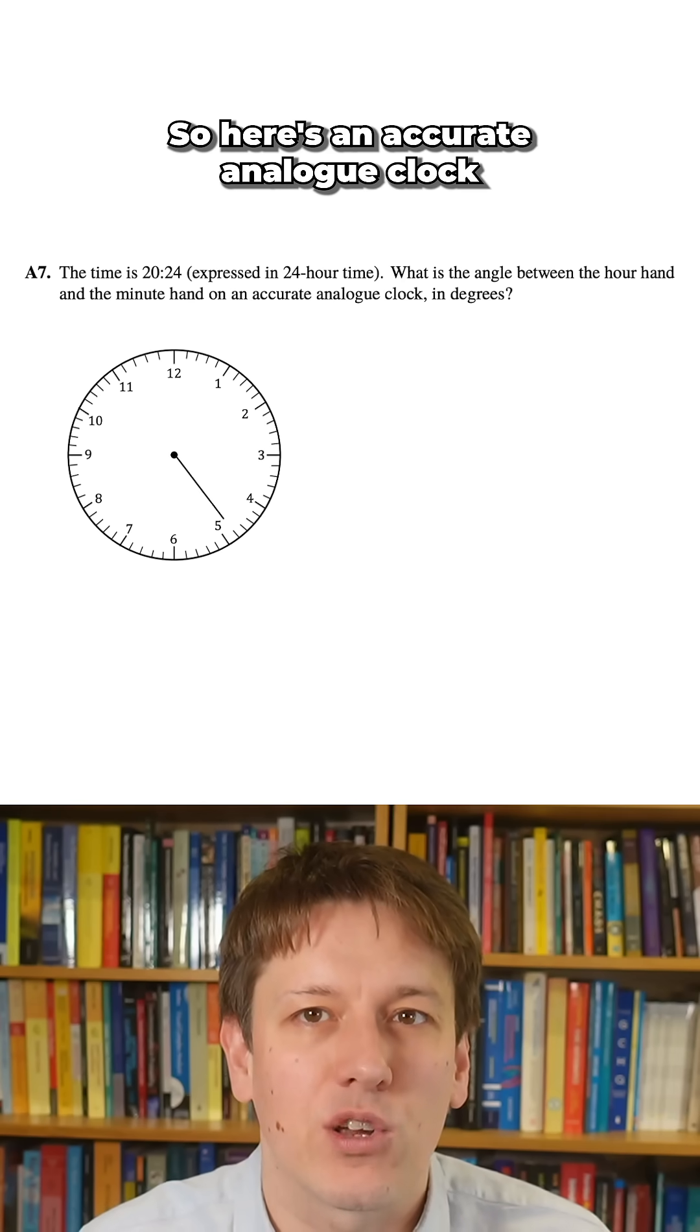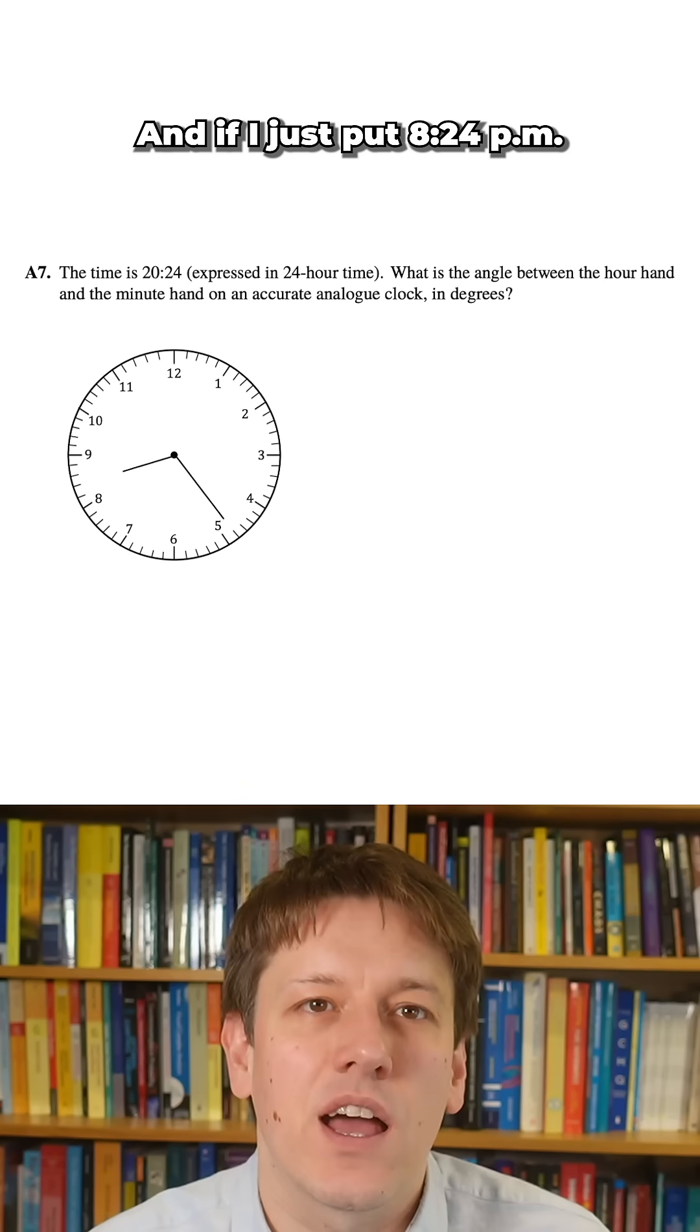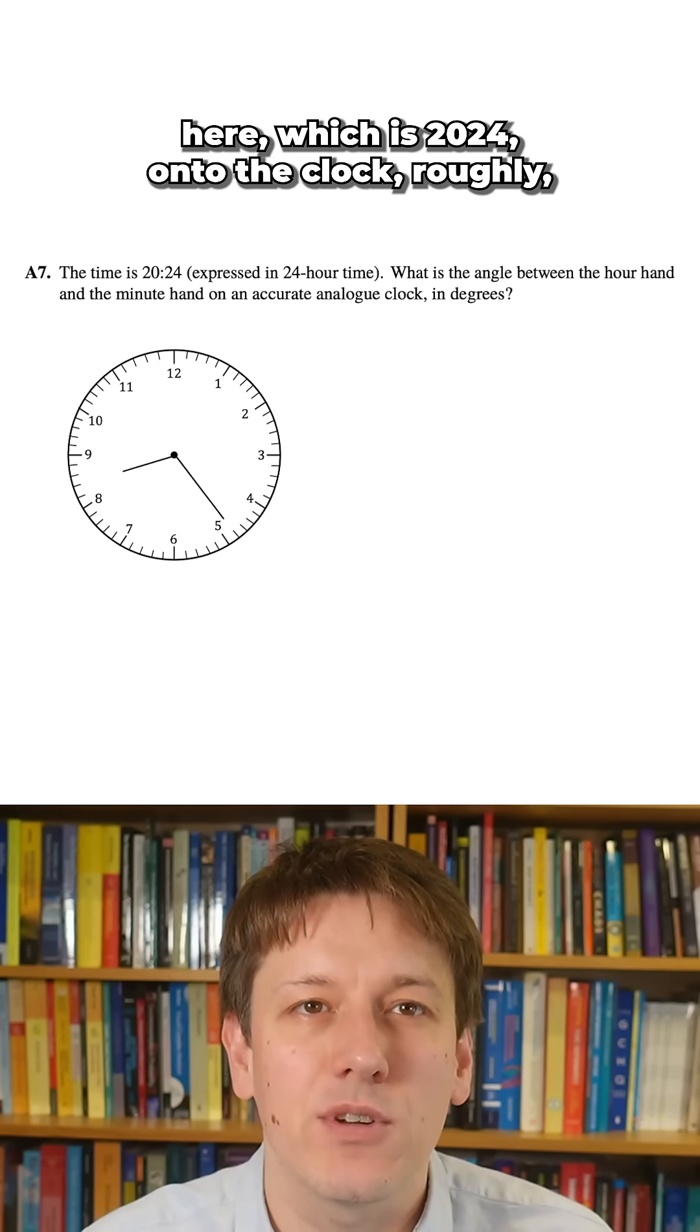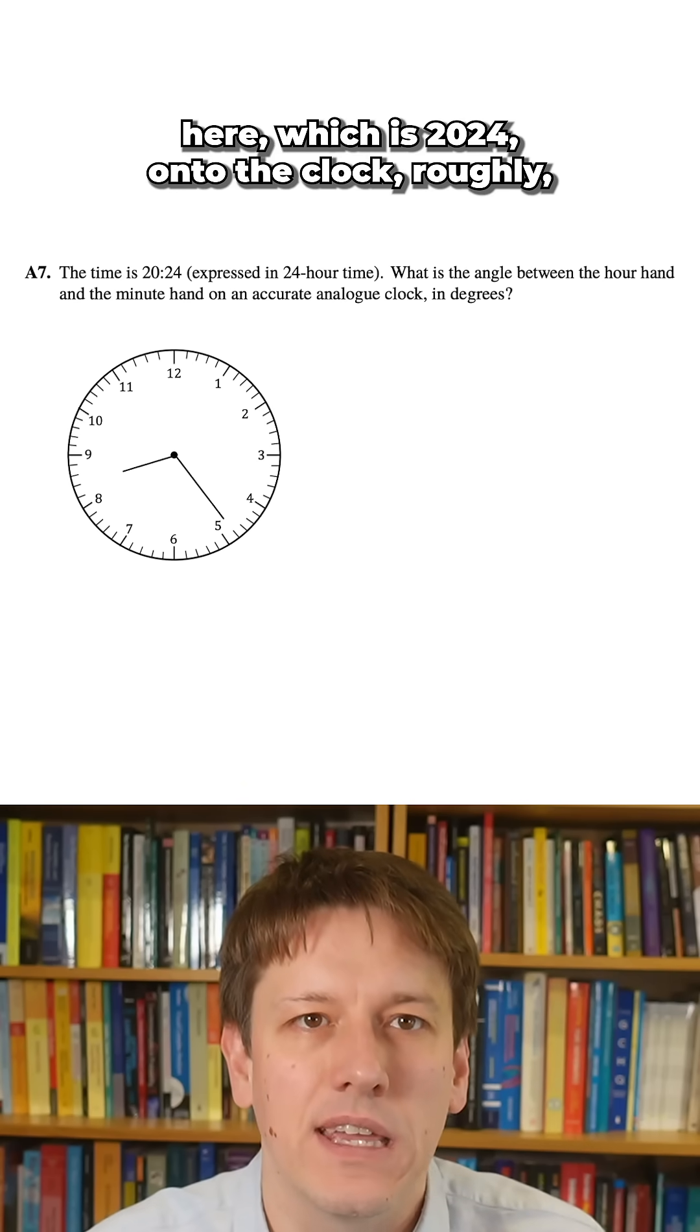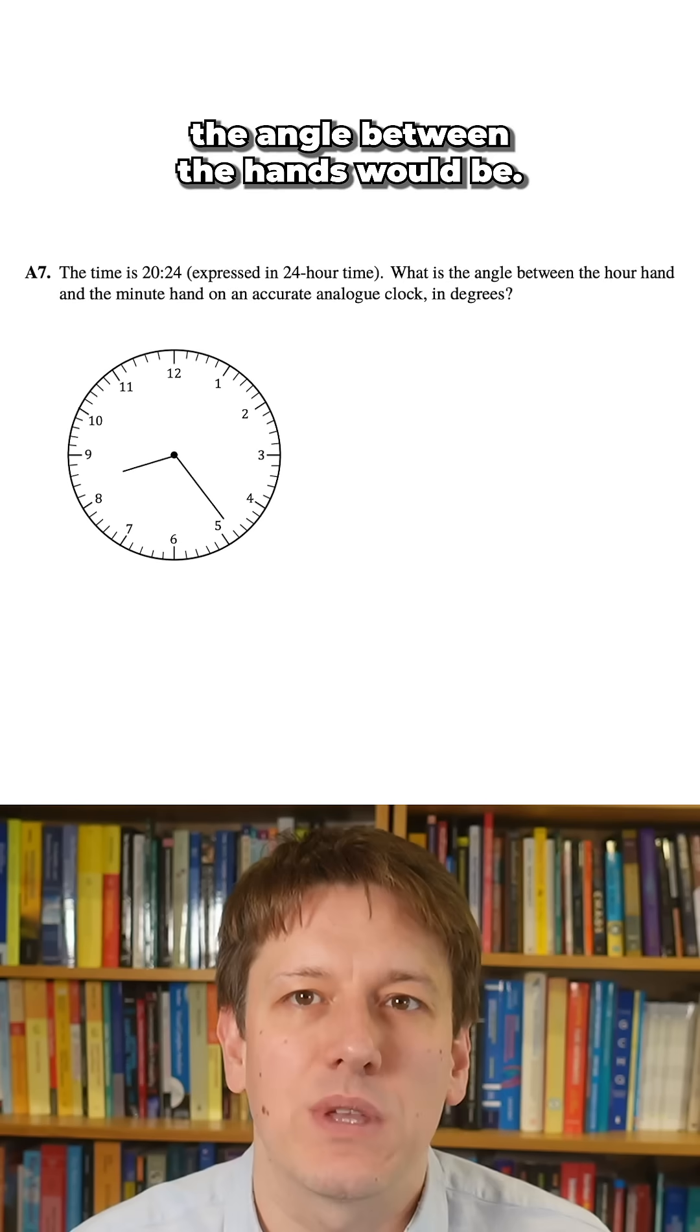So here's an accurate analog clock, or a picture of one, and if I just put 8:24pm here, which is 2024, onto the clock roughly, we can think about what the angle between the hands would be.